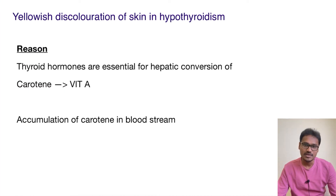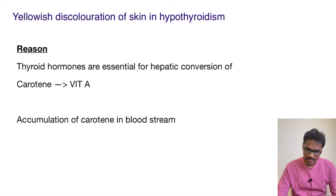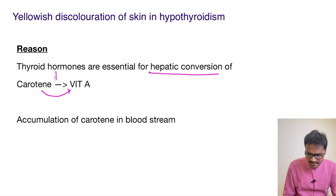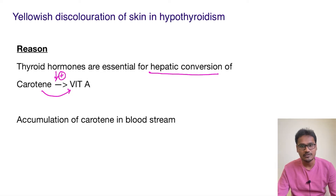In hypothyroidism, there is a reduction in thyroid hormones. These thyroid hormones are one of the essential components for the hepatic conversion of carotene to vitamin A. Thyroid hormone stimulates this hepatic conversion of carotene to vitamin A.